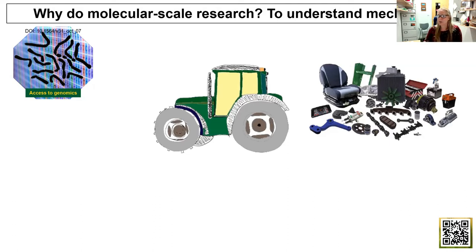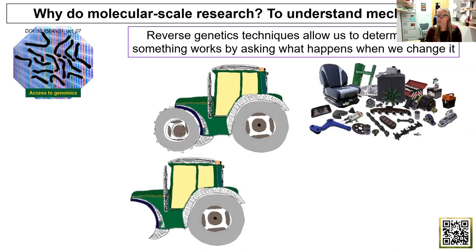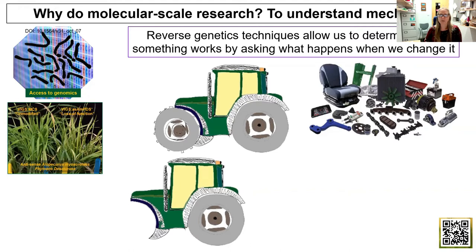Because seats look like seats, if you have something in your genome that looks like a seat, you can infer its function. We can learn from model organisms to infer function of genes in other genomes. The other thing we do with a tractor is take it apart — reverse genetics techniques allow us to determine how something works by asking what happens when we change it. For instance, if we take off the front tire, the tractor no longer functions properly and we can infer that front tires are necessary for forward motion.